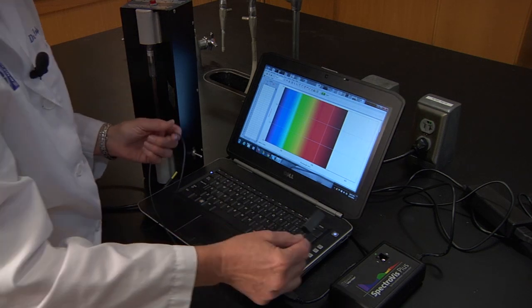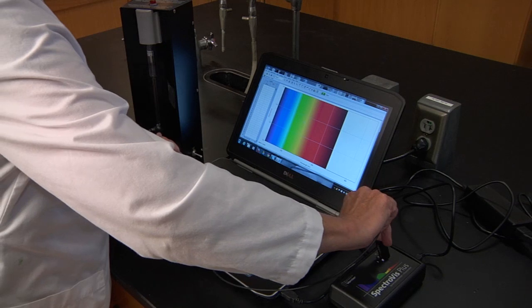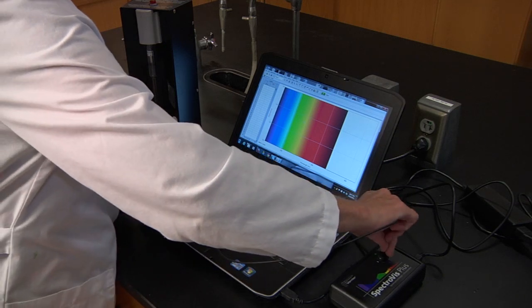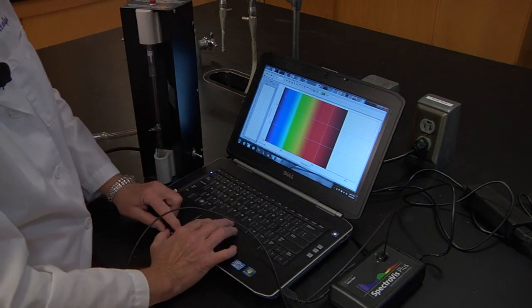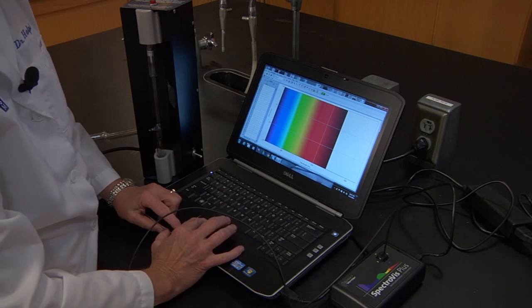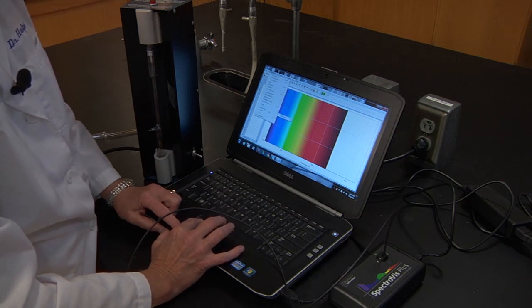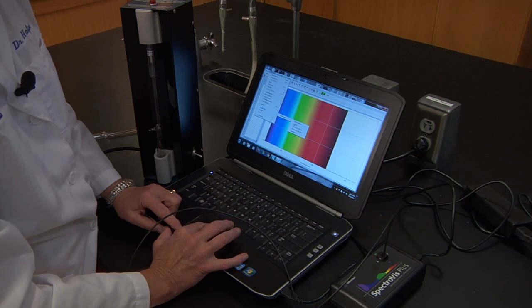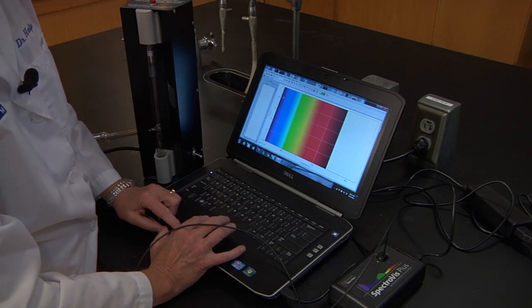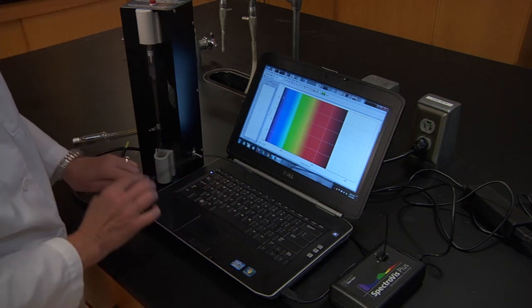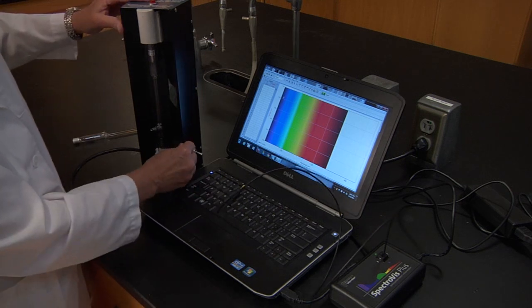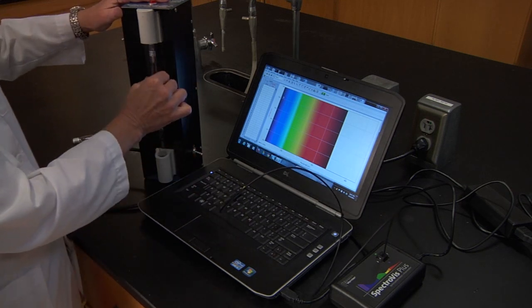So we're going to put our fiber optic cable in our spectrophotometer. We're going to tell our software that we want to measure intensity, and we're going to look at our hydrogen tube here.